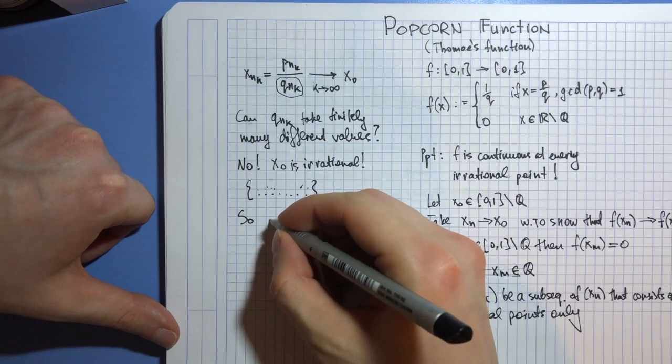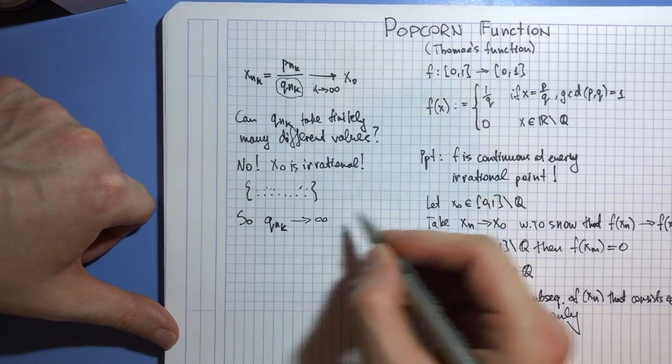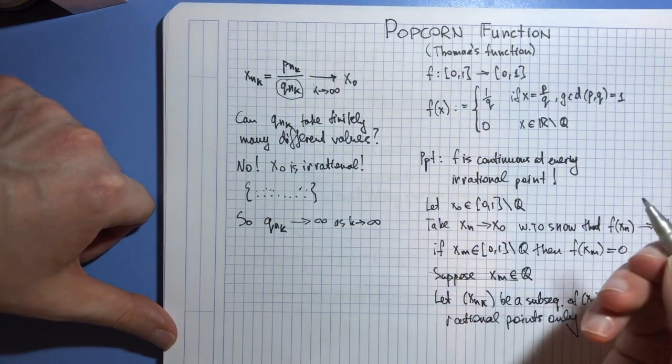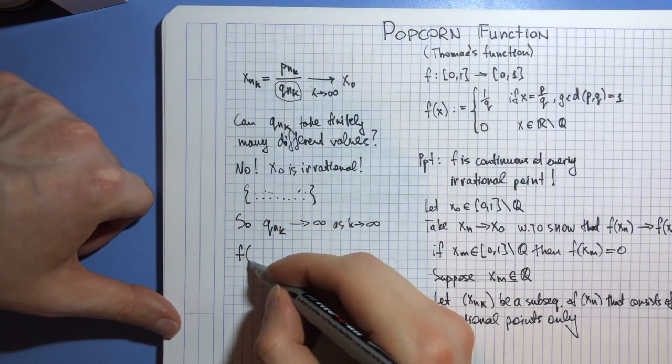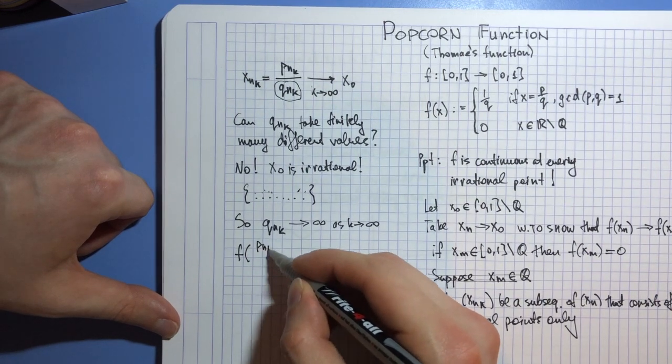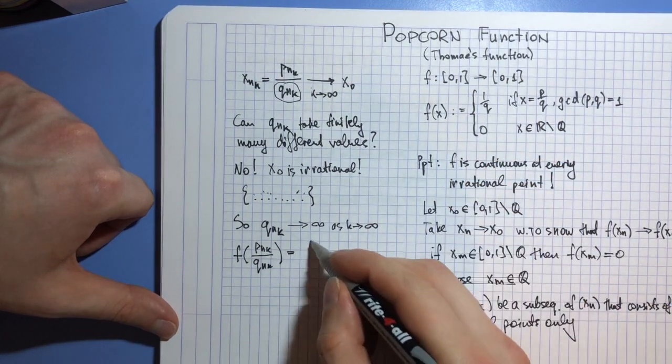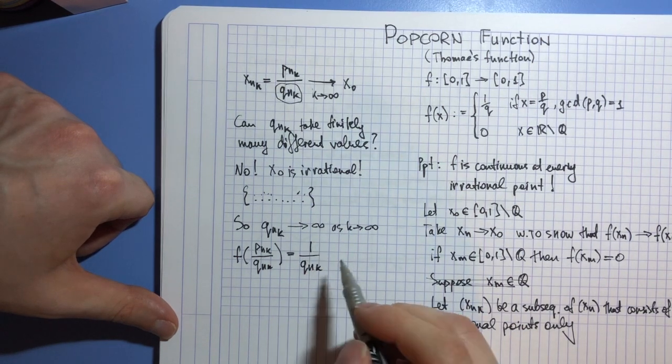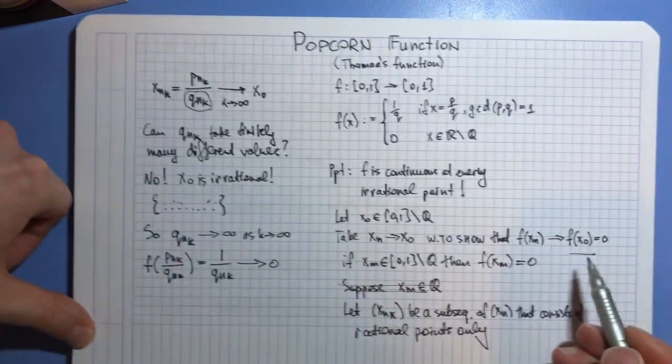This tells us that qₙₖ tend to infinity as k tends to infinity. But that implies that when we apply function to our point, it becomes 1 over qₙₖ, and since it tends to infinity, this guy tends to 0, which is exactly what we wanted here.